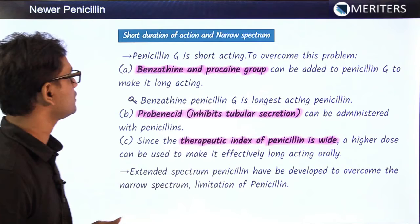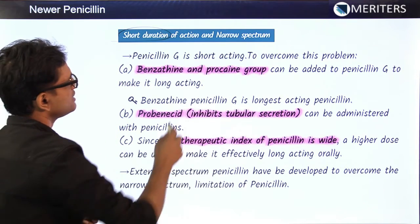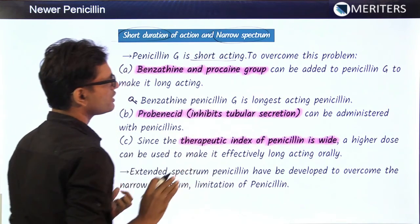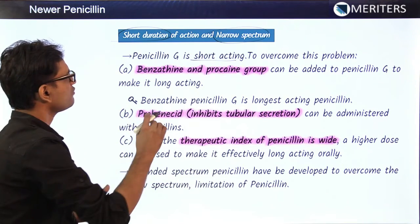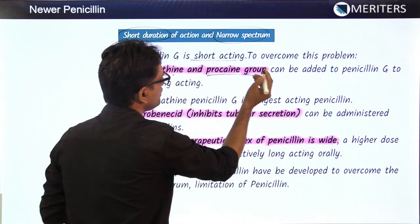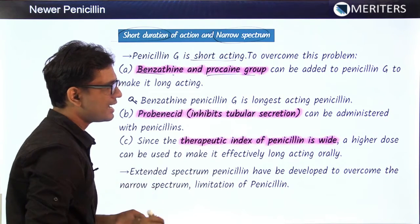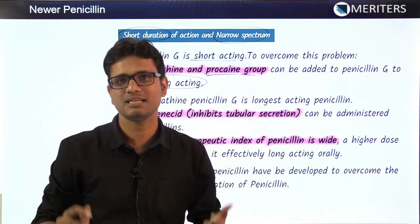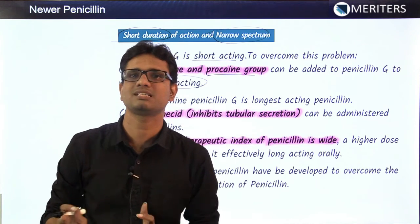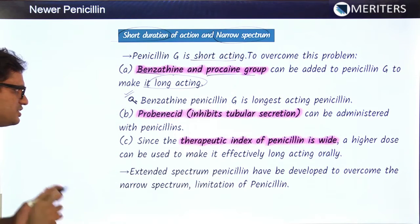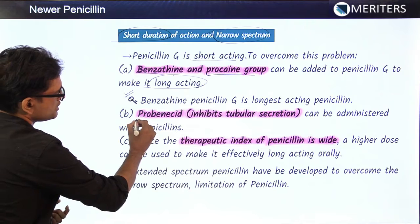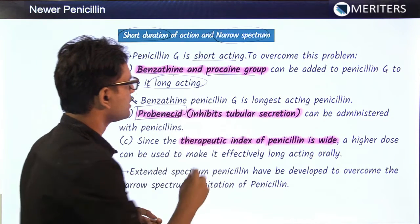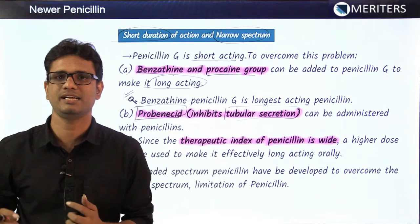Now let's discuss solutions for short duration and narrow spectrum. Penicillin G is a short-acting drug. To overcome this, certain groups have been added — benzathine or procaine have been added to Penicillin G, making it long-acting. Benzathine penicillin is the longest-acting penicillin, which is very important from an exam standpoint. Another solution is probenecid, a drug which inhibits tubular secretion — the extra mechanism used by the kidney to secrete out Penicillin G.